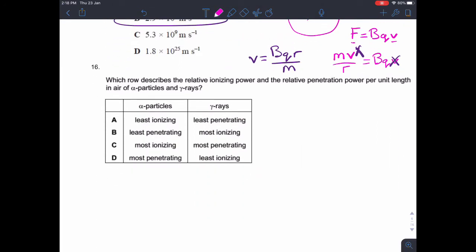Question 16. Which row describes the relative ionising power and the relative penetration power per unit length in air of alpha particles and gamma rays? Alpha particles are certainly the most ionising because they're the heaviest and they have the highest charge. Gamma rays are the most penetrating because they don't have any charge and they don't have any mass, so they don't interfere with as much stuff. So the answer is C.